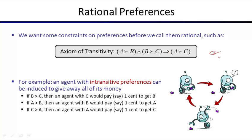Why is transitivity really meaningful? Consider an agent that doesn't satisfy it: it prefers A over B, B over C, but also C over A. Since the agent prefers B over C, it would pay one cent to get B instead of C. Since it prefers A over B, it'd pay one cent to get A instead of B. Now it has A. But since it prefers C over A, it pays one cent to get C instead of A. It's gone around, gotten back to C, and spent three cents. Any time you find an agent that doesn't satisfy transitivity, you can make money off them.